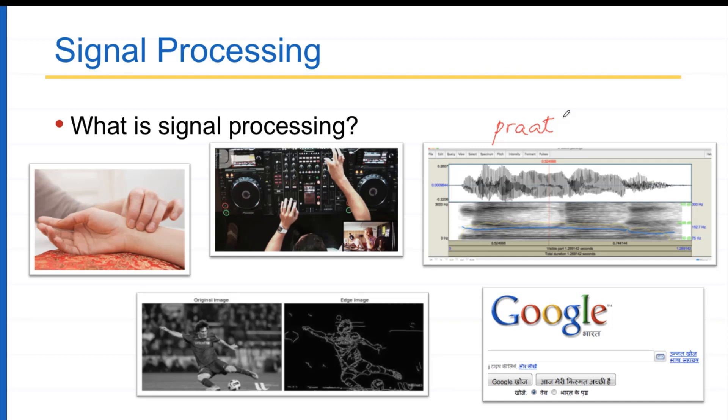Then you have image processing, in which you have original image, some image. Then you can apply different kinds of signal processing techniques or image processing techniques to extract different kinds of information. For example, in this example, the image processing system is extracting edges from the image. Using these edges, you can do something more useful.